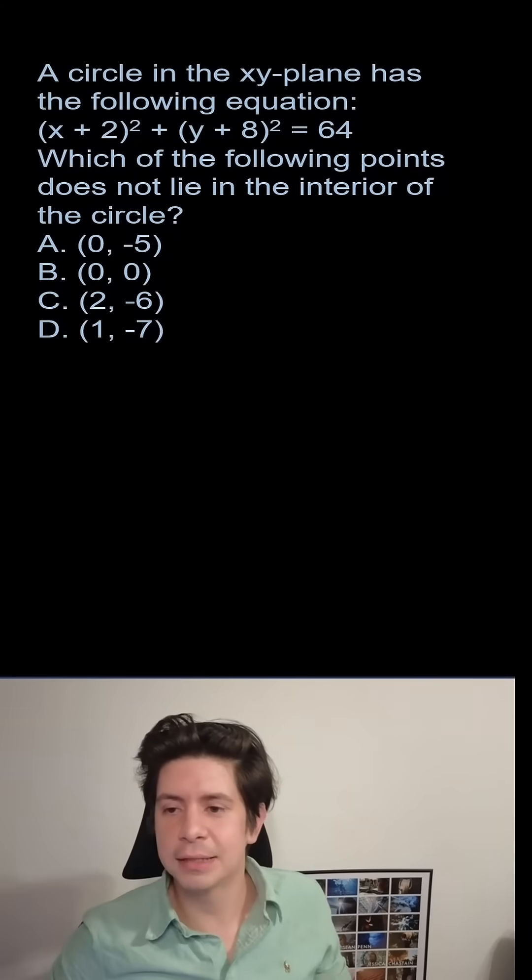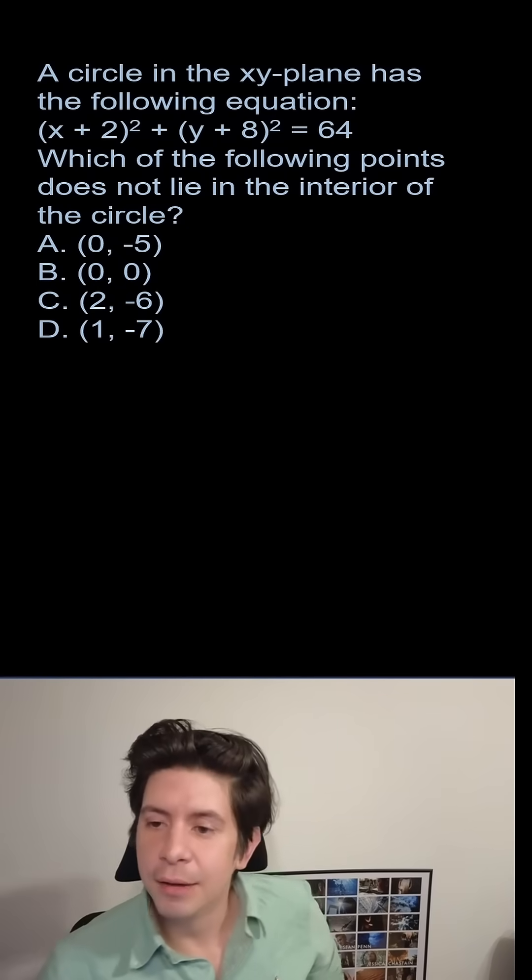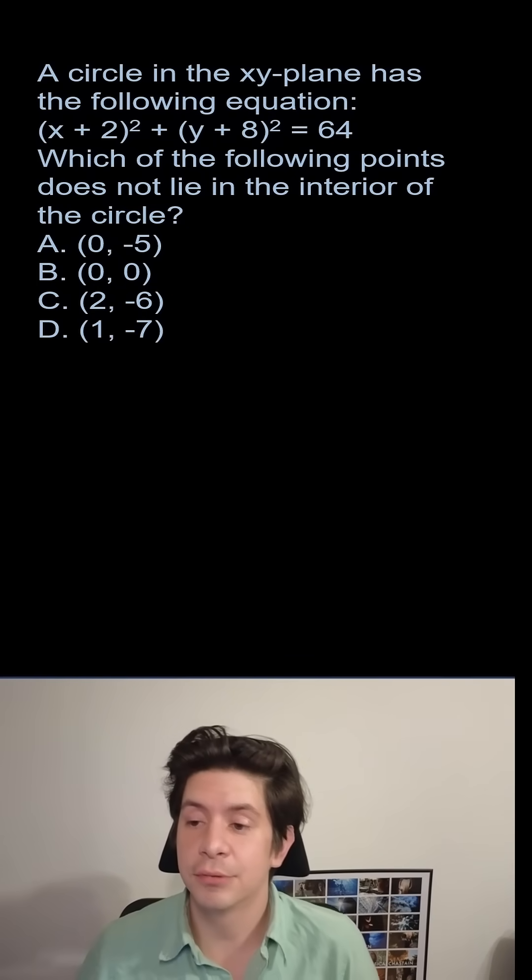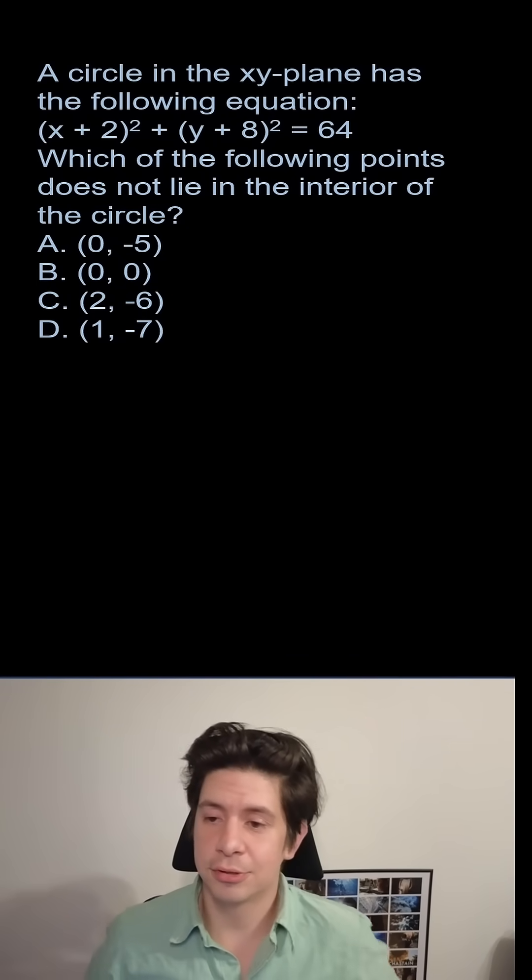All right, so we have this one here. A circle in the xy plane has the following equation, x plus 2 squared plus y plus 8 squared equals 64, which of the following points does not lie in the interior of the circle.